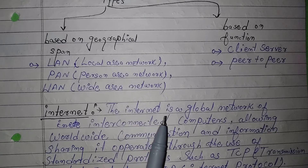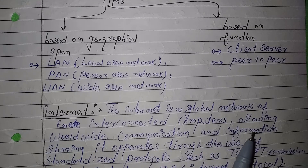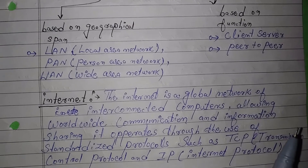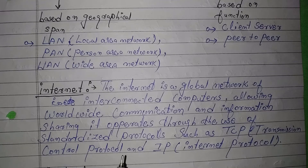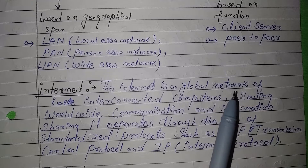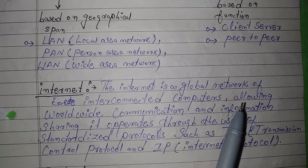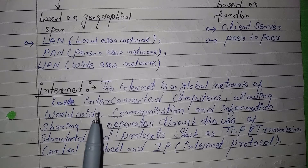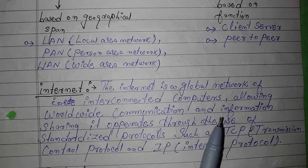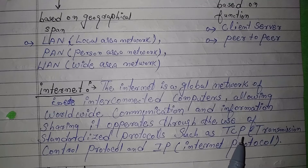Now, the Internet. It is a network of interconnected computers allowing worldwide communication and information sharing. It operates through the use of standardized protocols such as TCP, that is Transmission Control Protocol, and IP, that is Internet Protocol.